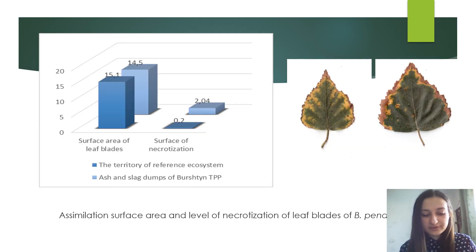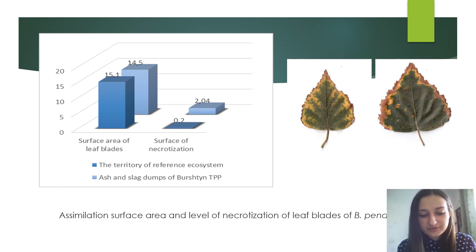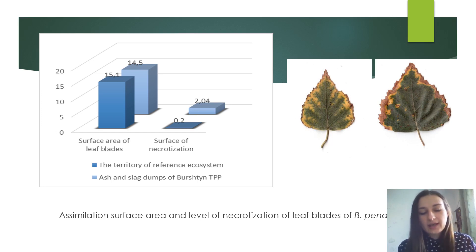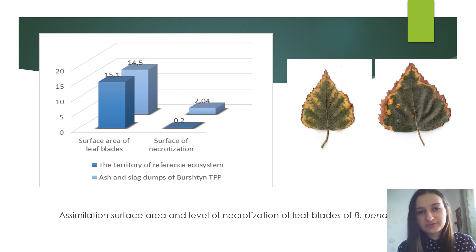The leaves of Betula pendula trees growing on ash and slack dumps suffer from necrotic lesions. The most common necrosis is on the periphery of the leaf blades, occupying approximately 14.1% of the assimilated surface. In the absence of man-made factors, necrosis occupies only 1.32% of the assimilated surface, equivalent to 2.05 cm².